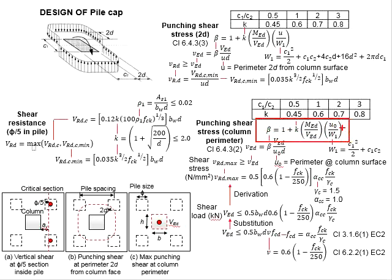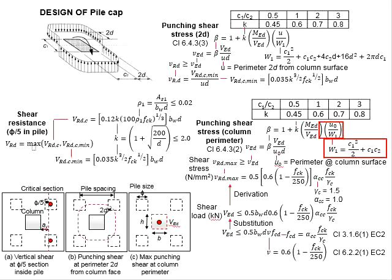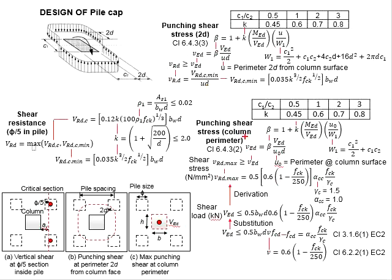The equation for beta is given here. In the case that there is no moment, beta will be equal to 1. If there is a moment, you will need to compute beta and it will be more than 1.0. This formula is very identical to the previous one, except for u0 and w1. The process to obtain K is totally the same as before. u0 is referring to the perimeter length of the column, while w1 is determined from this formula. C1 and C2 may be referred to from this diagram. With the shear stress computed, you will need to compare it with the shear resistance given by this formula.